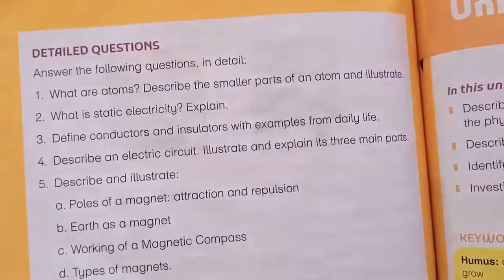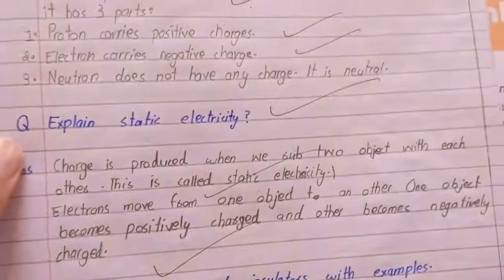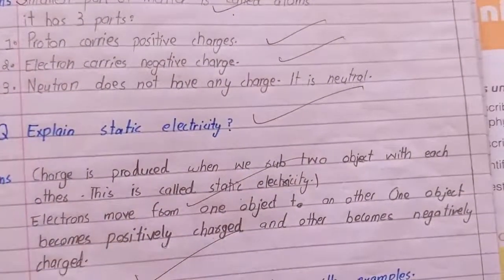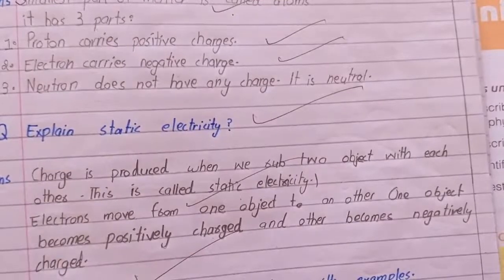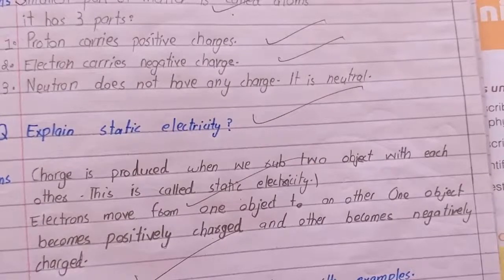What is static electricity? In static electricity, an electric charge is produced when we rub two objects with each other. This is called static electricity. Electrons move from one object to another; one object becomes positively charged and the other becomes negatively charged.